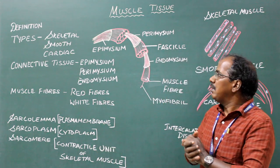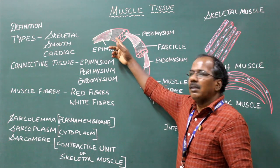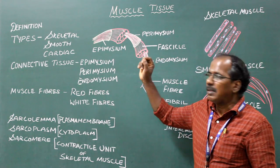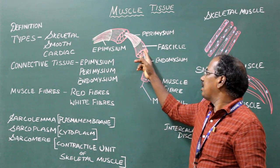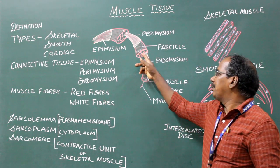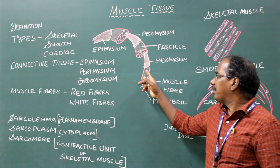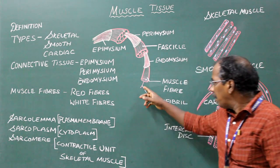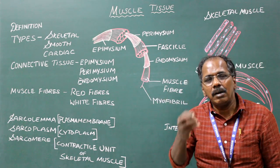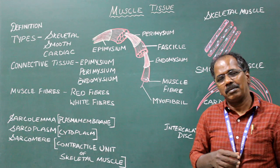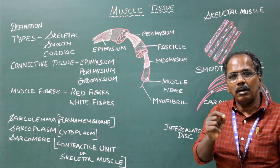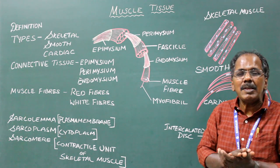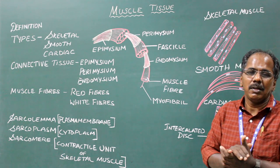Regarding the structure of the muscle: you have the entire muscle, which contains bundles of muscle fibers. The muscle fibers contain myofibrils. The myofibrils contain a number of myofilaments. The myofilaments are made up of actin and myosin filaments. This is the basic structure of the muscle.